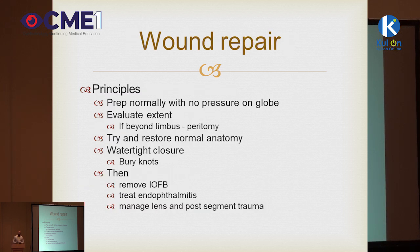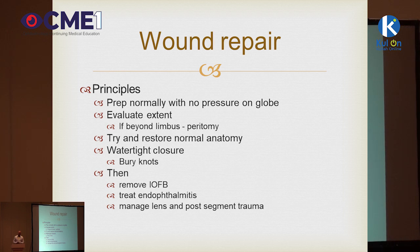The principles of wound repair: prepping the eye is very important — keep it sterile but don't put antiseptic on the globe if you think it's open. Be very mindful about the speculum to avoid unnecessary posterior pressure. First, oppose as much tissue as possible — if there's an obvious corneal laceration, repair that before exploring for a scleral rupture. Always aim for a watertight closure, which you can verify with intraoperative fluorescein. Always bury the knots to avoid post-operative irritation and inflammation.